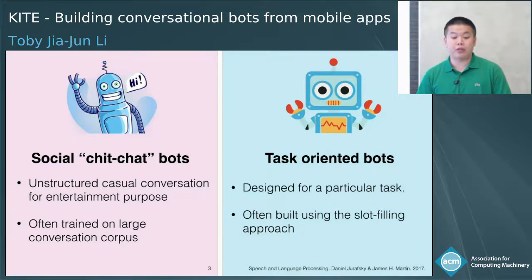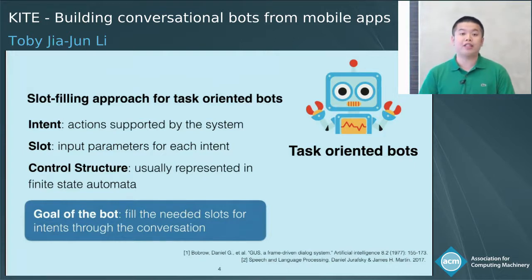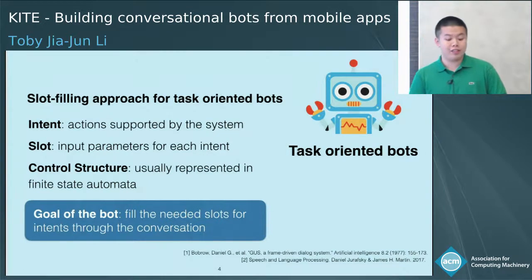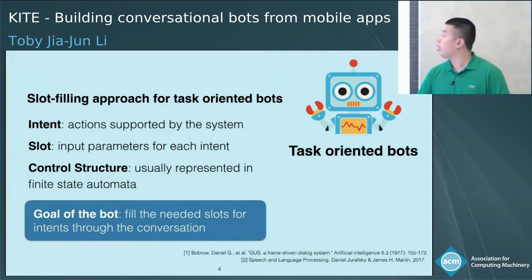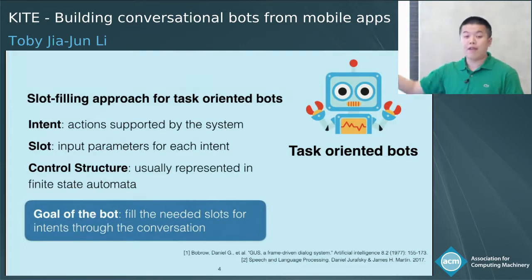State-of-the-art chit-chat bots are usually trained on large conversational corpora in an end-to-end fashion. In this paper, we focus on task-oriented bots. Most task-oriented bots are built using a slot-filling approach, where the conversation is structured, unlike the end-to-end corpus-based approach used in social chit-chat bots. The structures in the slot-filling approach can ensure all the constraints and dependencies in the task. The goal of our tool, Kite, is to reduce developer efforts for building slot-filling bots by automatically extracting those components from existing mobile apps.